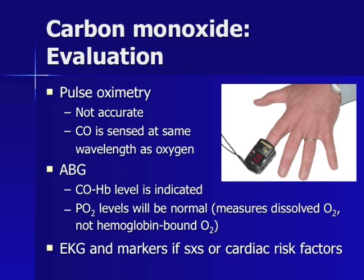Pulse oximetry should never be used to determine severity of carbon monoxide toxicity. The standard pulse oximeter measures saturation of oxygen at two different levels: oxygenated hemoglobin and deoxygenated hemoglobin. Carbon monoxide is sensed by the oximeter as oxygenated hemoglobin, and pulse ox levels will thus be falsely elevated in patients with carbon monoxide poisoning. The most accurate method is to obtain a carboxyhemoglobin level with a blood gas. Note that the PaO2 levels on blood gas will also be normal, because the machine measures levels of dissolved oxygen, not hemoglobin-bound oxygen.